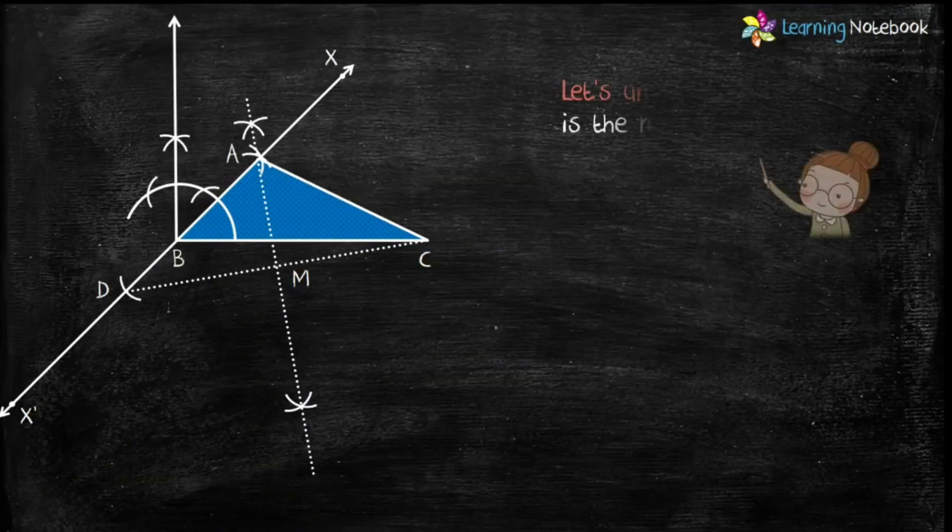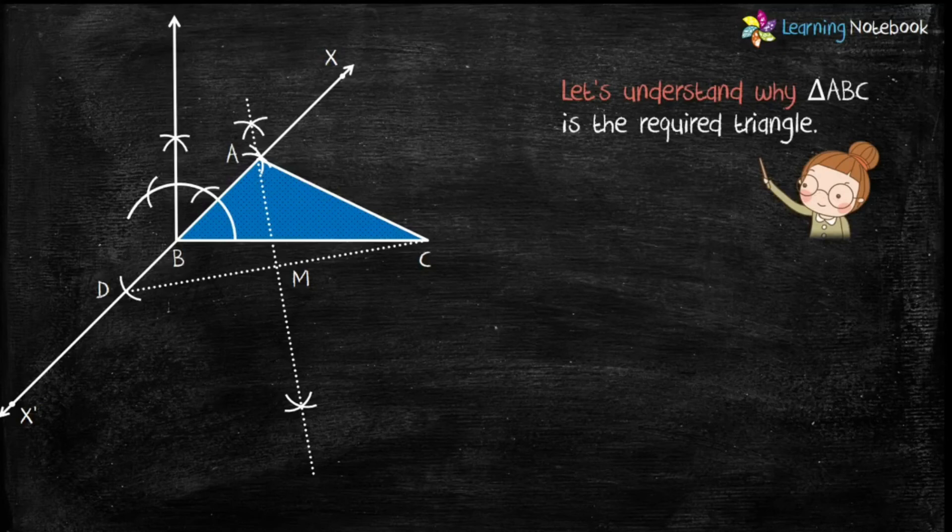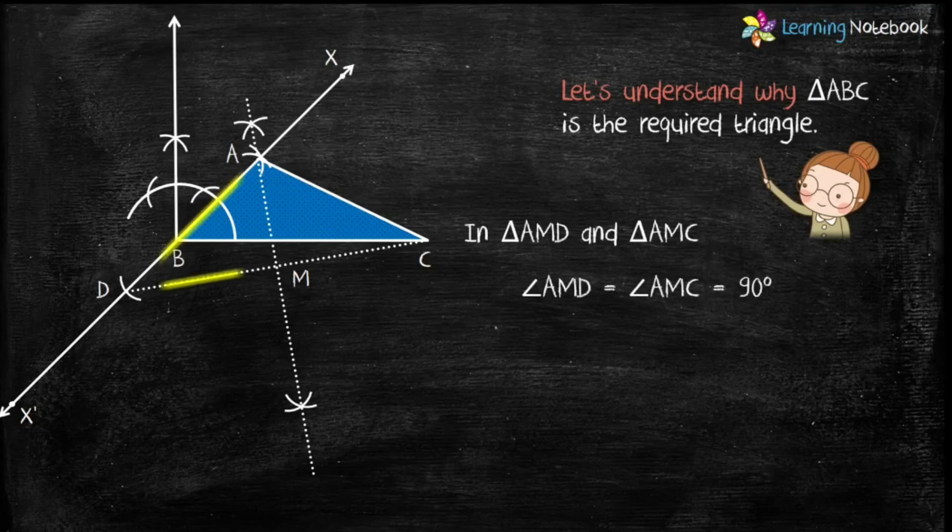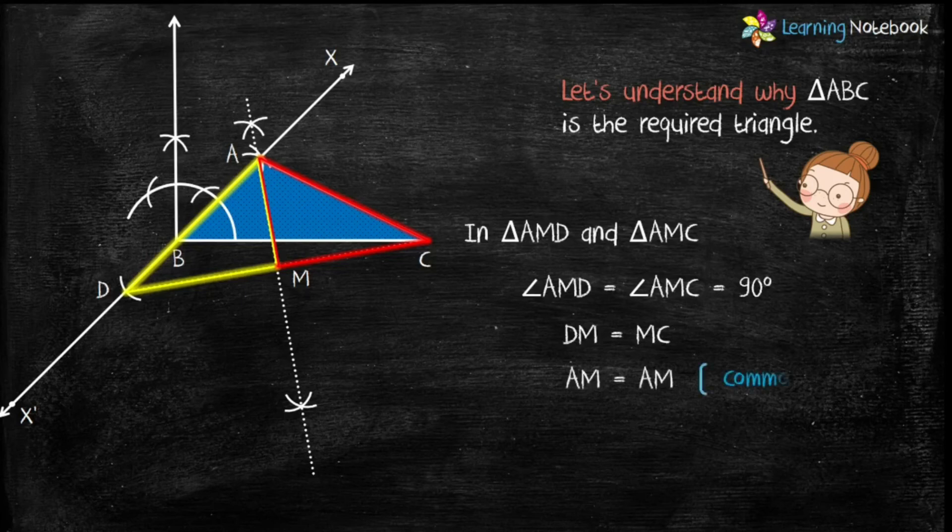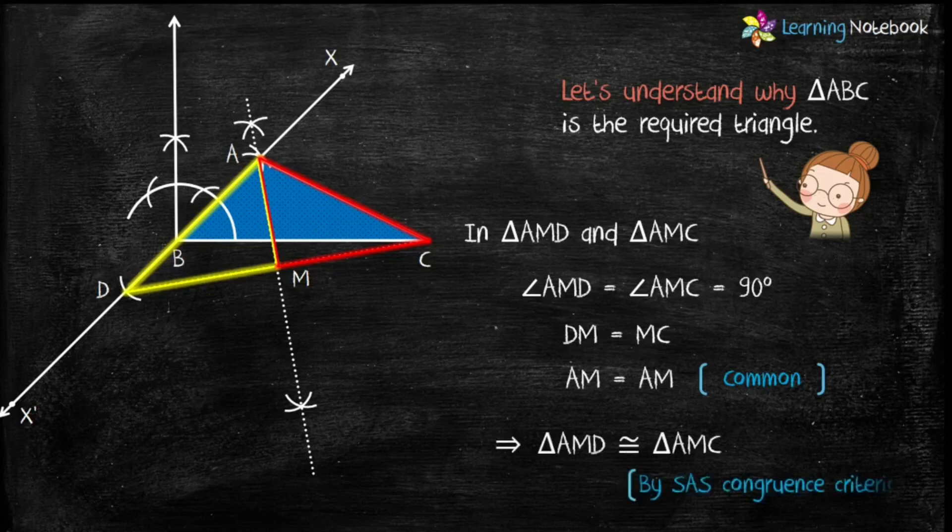Now let's understand why triangle ABC is the required triangle. In triangles AMD and AMC, angle AMD equals to angle AMC which is equal to 90 degrees. And DM equals to MC because of the construction of the perpendicular bisector. Also AM equals to AM which is common to both the triangles. Therefore we can say triangle AMD is congruent to triangle AMC using SAS congruence criterion.